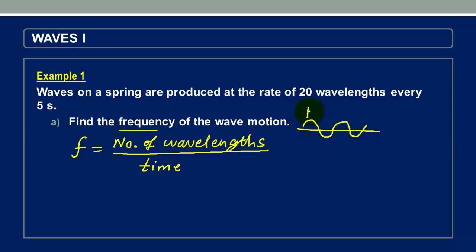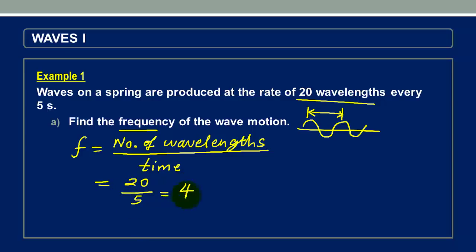If we are given a wave, a wavelength starts from one point all the way to the next corresponding point, so it is a complete cycle — a complete oscillation. So if they tell us that the wave makes 20 wavelengths, it is like telling us that the spring makes 20 oscillations every 5 seconds. We divide the number of wavelengths, which is 20, by 5, and we get 4 wavelengths per second, or 4 oscillations per second, or 4 Hz. That is the frequency of this wave.